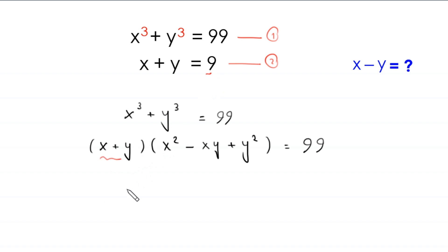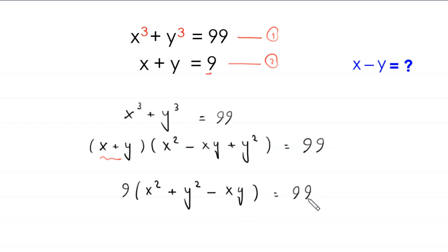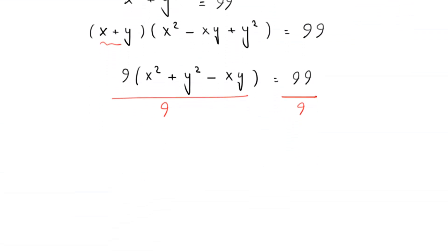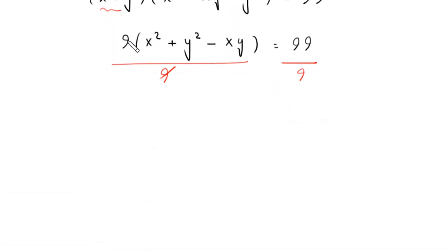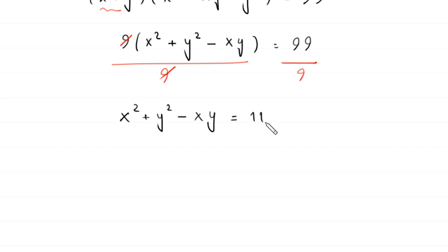This becomes 9 times, rearranging the terms, x squared plus y squared minus xy, is equal to 99. From here we divide both sides by 9. This 9 cancels with the other 9, and on the left hand side we are left with x squared plus y squared minus xy is equal to 99 divided by 9, which is equal to 11.